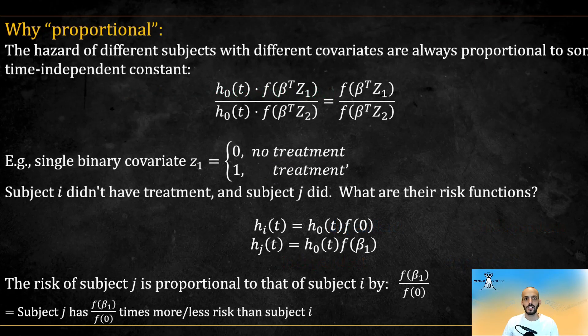The model is called proportional because the hazard ratio between different subjects is a time-independent constant, because the time-dependent factor cancels out. For example, if we have a single binary covariate, the risk of subject j is proportional to that of i by this factor, meaning that subject j has this times more or less risk than subject i.